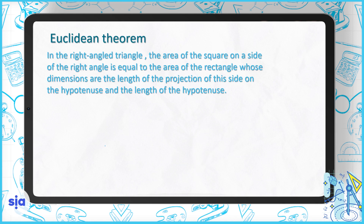The Euclidean Theorem says: in a right-angled triangle, the area of the square on a side of the right angle is equal to the area of the rectangle whose dimensions are the length of the projection of this side on the hypotenuse and the length of the hypotenuse.